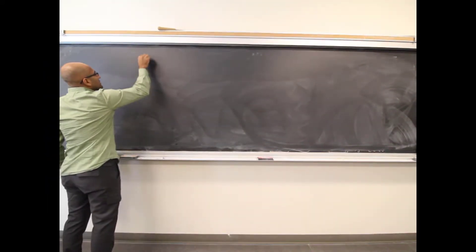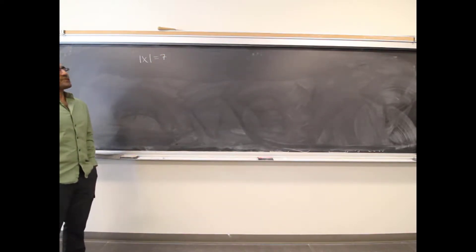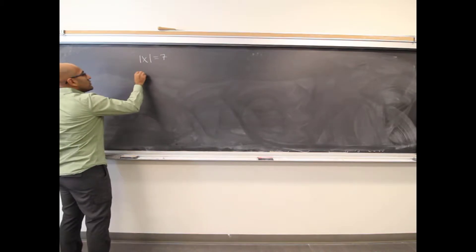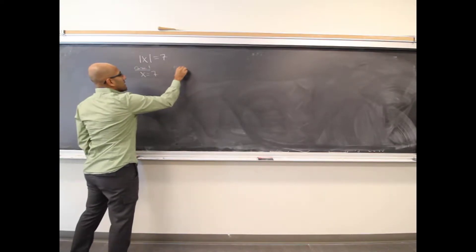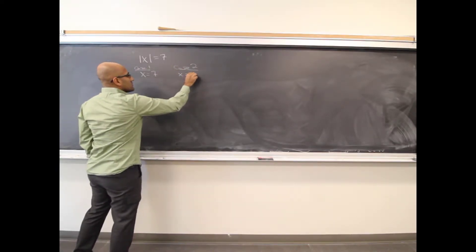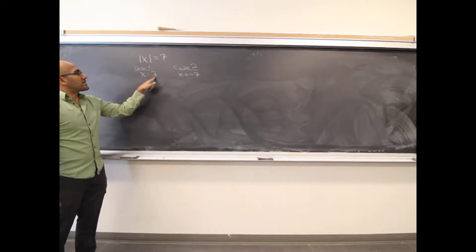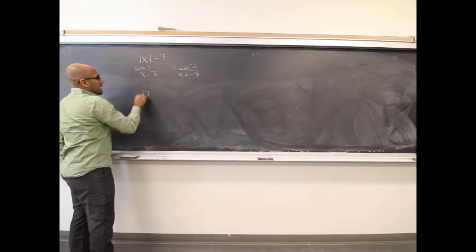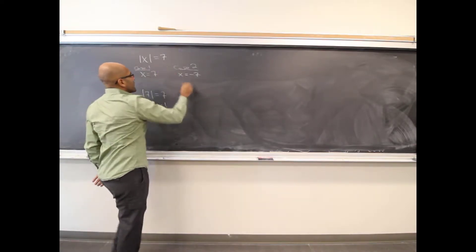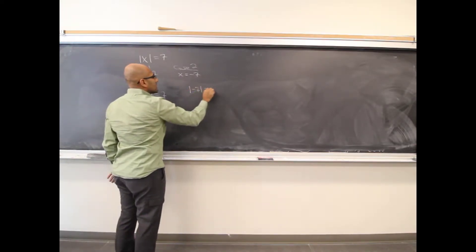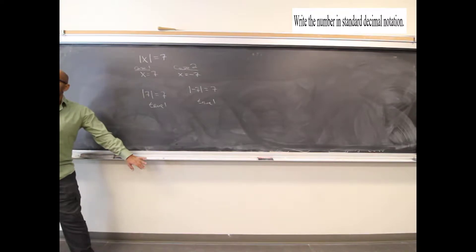For example, if we solve the absolute value of x equals 7, there are two answers. Case 1: x equals 7. Case 2: x equals negative 7. Both are true — the absolute value of 7 equals 7, and the absolute value of negative 7 also equals 7. Both are valid solutions.